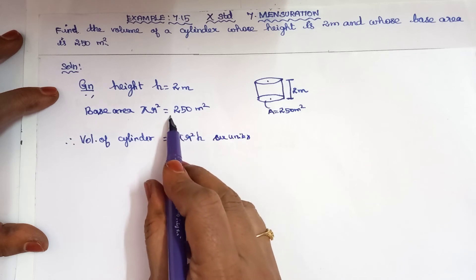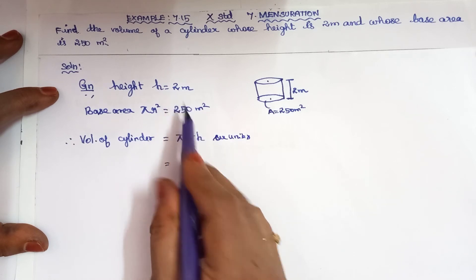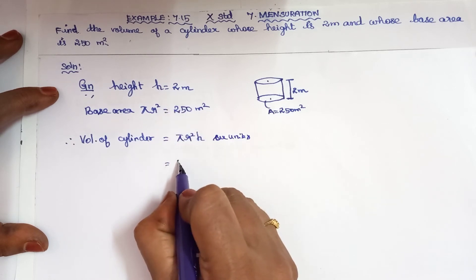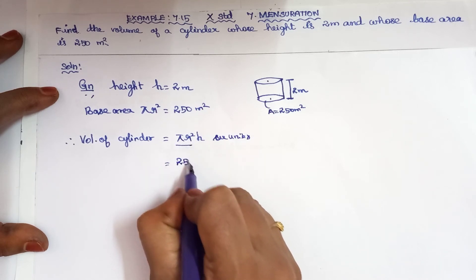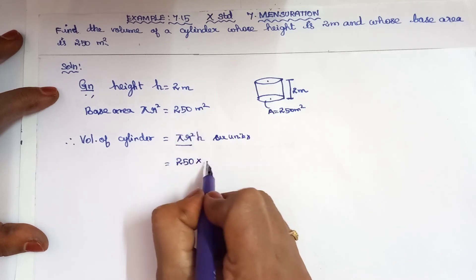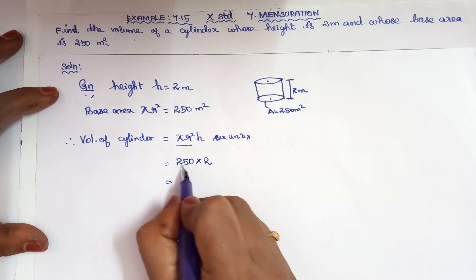Here is the formula pi r square. Pi r square is 250, multiplied by 2, equals 500.